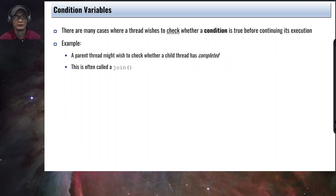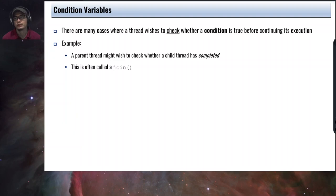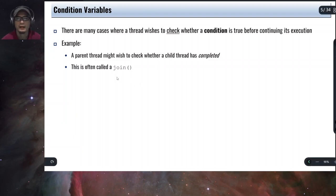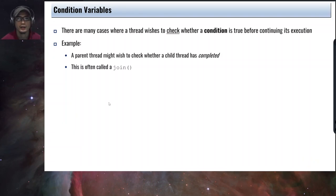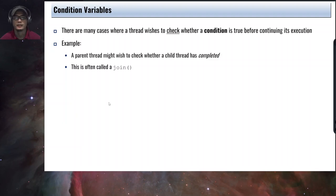Now in this chapter we're going to talk about condition variables. There are many cases where a thread wishes to check whether a condition is true before continuing its execution — this is more of a synchronization problem where one thread will try to check whether another thread is done before it can continue. An example would be a parent thread wishing to check whether a child thread has completed. When we talk about processes, we have a parent process that uses fork to create a child process, and then we have the wait system call, which allows the parent process to wait for the child process to finish.